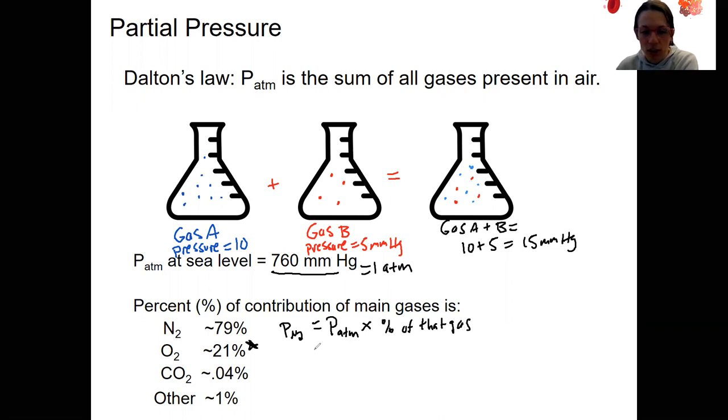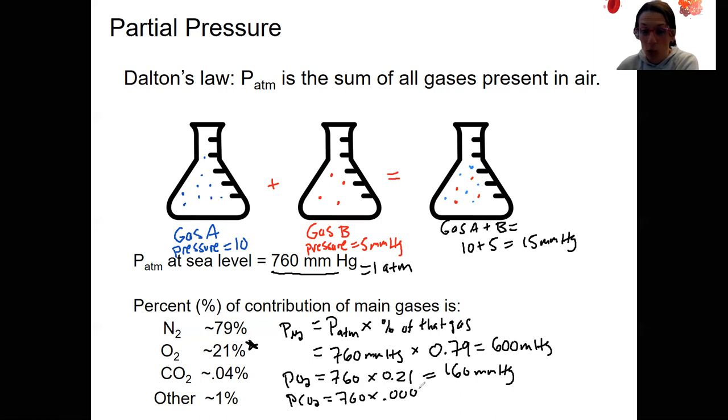Does that make sense? Let's do this, right? So for PN2 of nitrogen, it's going to be 760. PATM at sea level, which is what we're going to start with, is always going to be 760 times 0.79. That equals 600 millimeters of mercury. PO2, 760 times 0.21, 160 millimeters of mercury. And lastly, PCO2, 760 times 0.0004 equals 0.3 millimeters of mercury.